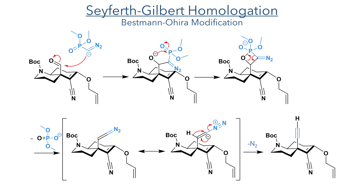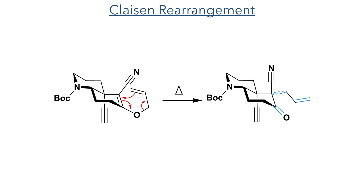Heating the allyl compound in toluene promoted a [3,3]-sigmatropic rearrangement. In this reaction, two double bonds migrate, one sigma bond is broken and a new sigma bond forms. This happens in a concerted six-membered transition state with a chair-like structure and produces a ketone and a new alkene. This product is thermodynamically favoured as the carbon-oxygen double bond is stronger than a carbon-carbon bond.